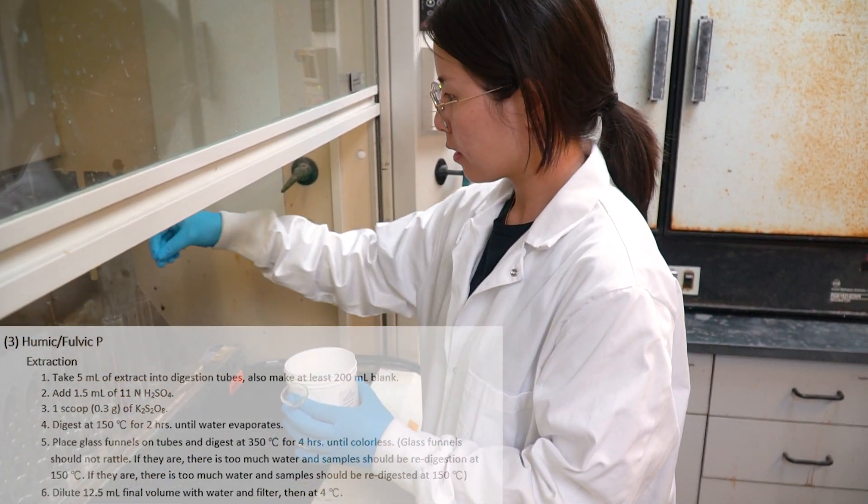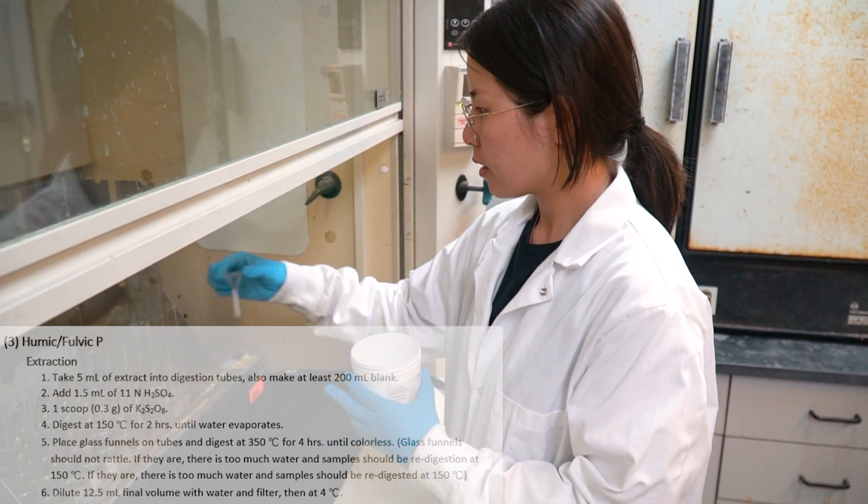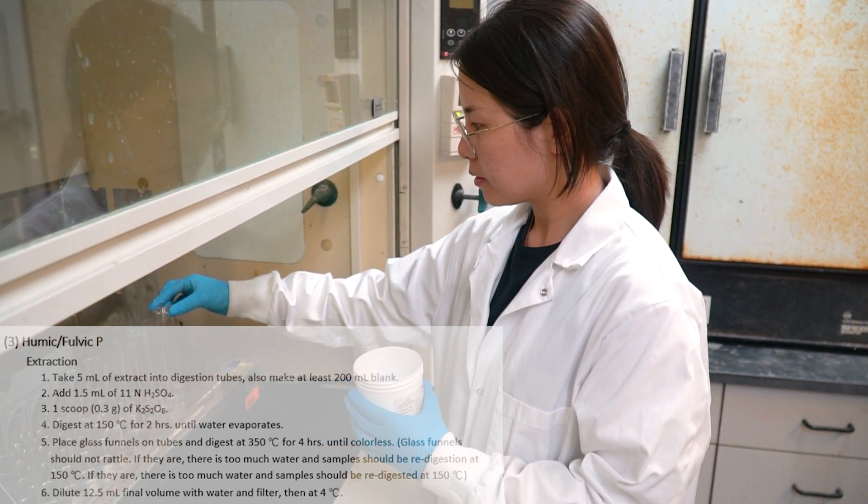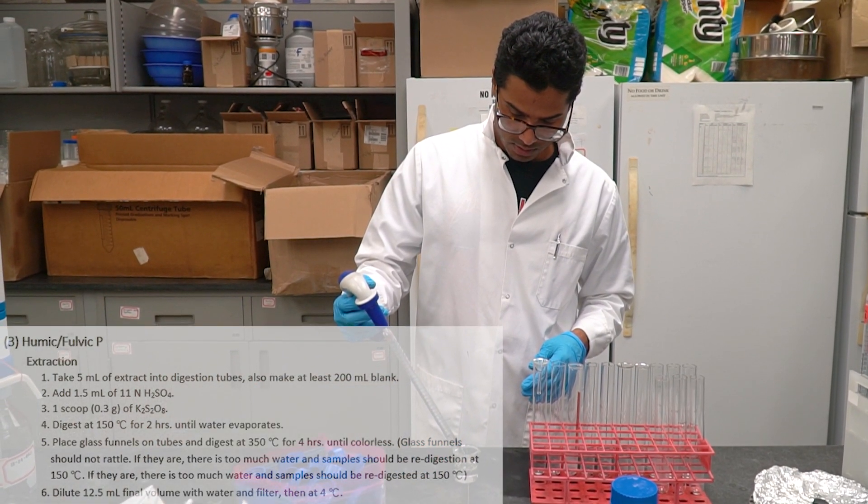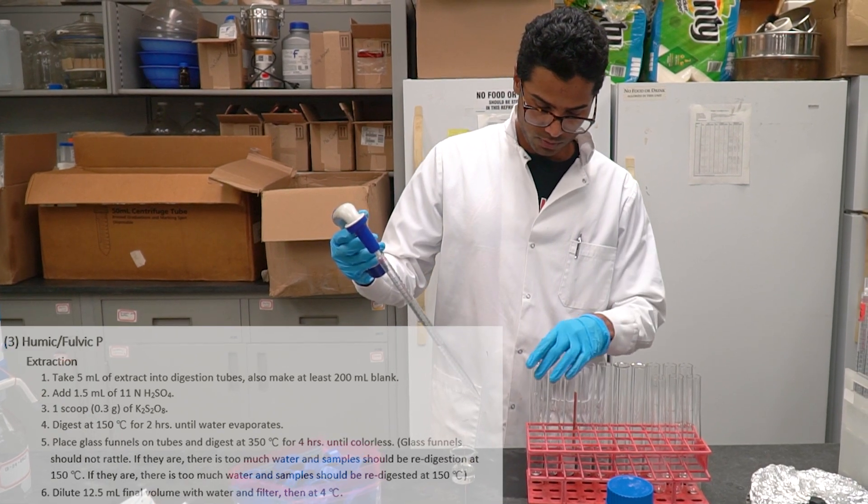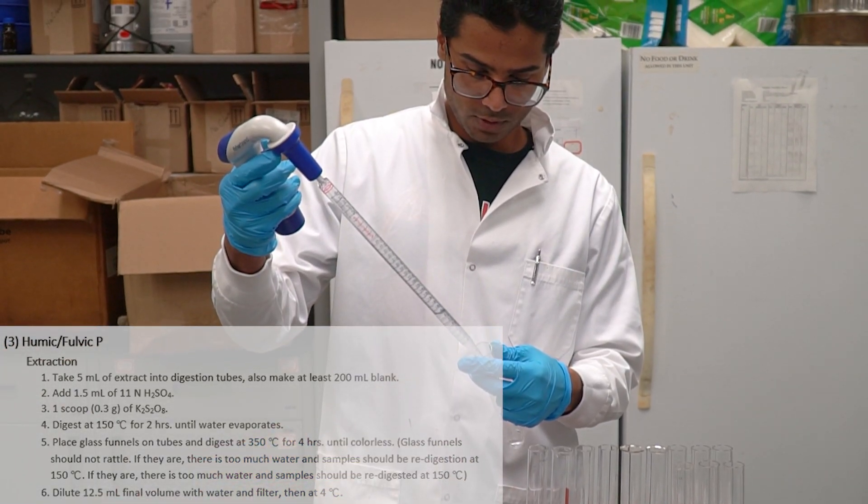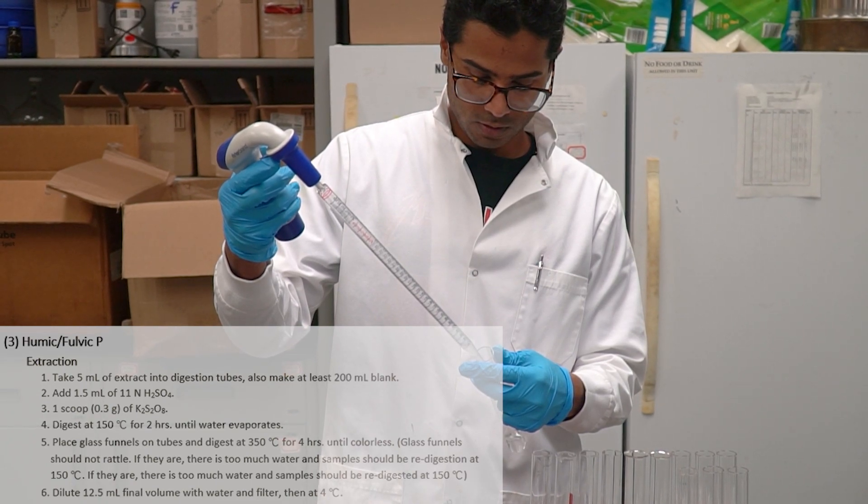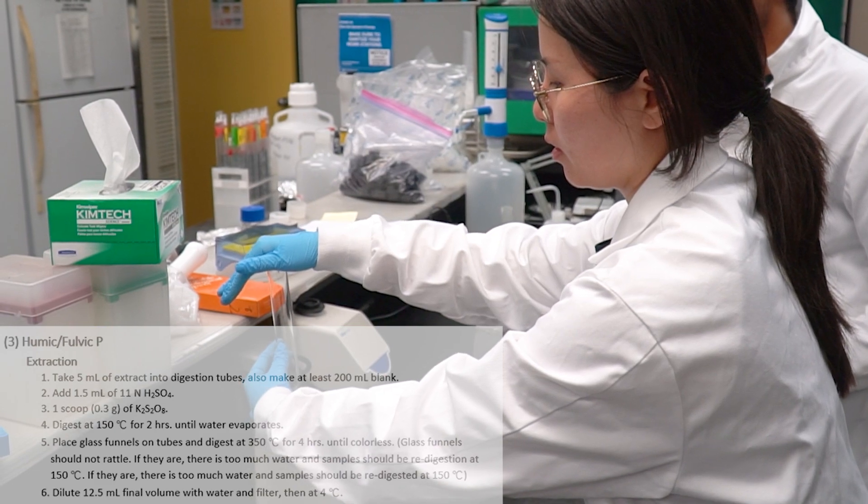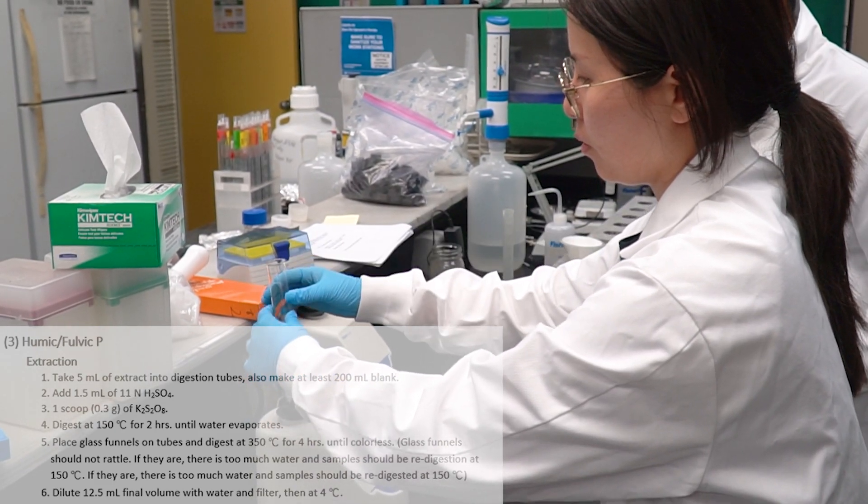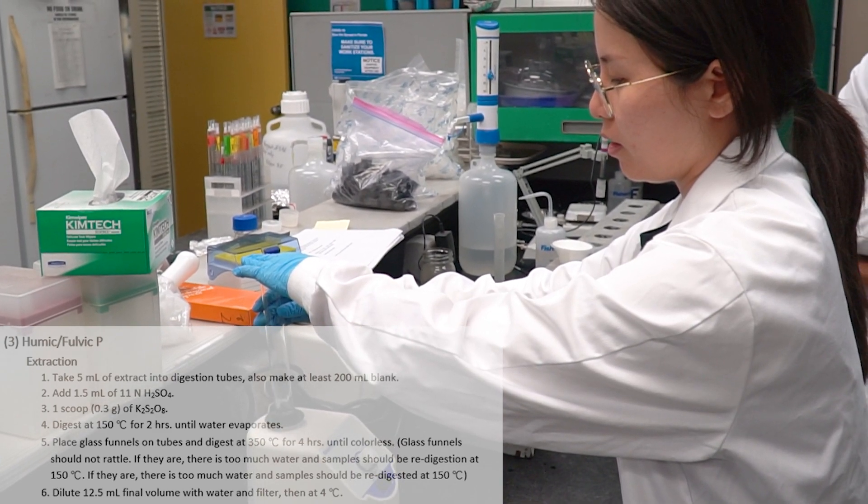Then, we have to digest the samples at 150 degrees Celsius for 2 hours until all water evaporates. Place the glass funnels on the tubes in the digestion machine and digest it for 4 hours at 350 degrees Celsius until the solution becomes colorless. If there is water present, then we have to re-digest it at 150 degrees Celsius again.